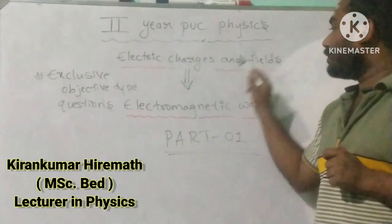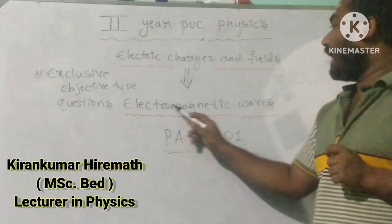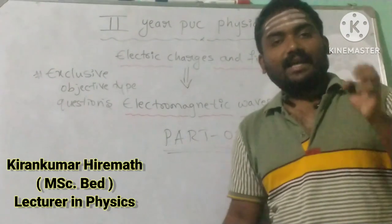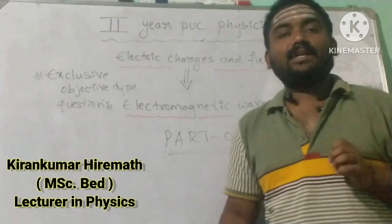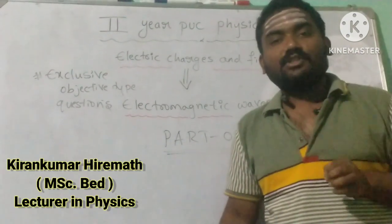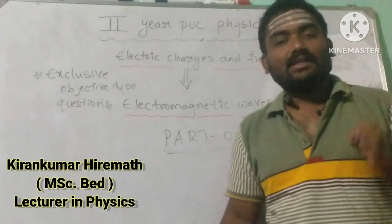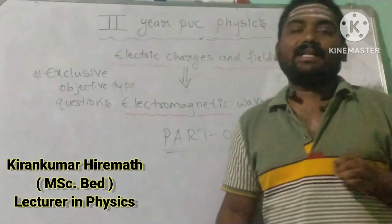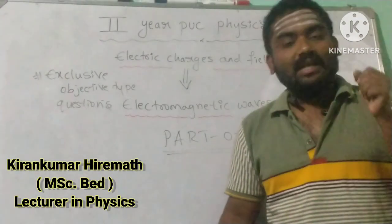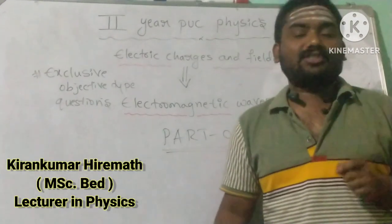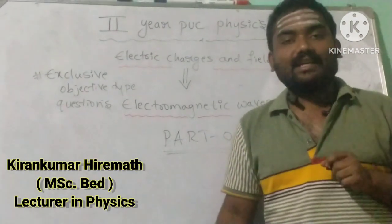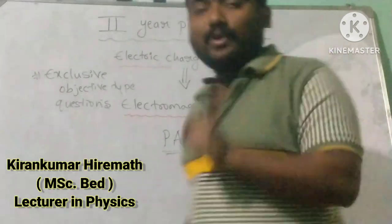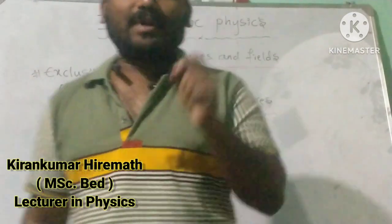These cover chapters from Electric Charges and Fields up to Electromagnetic Waves, including Electric Potential and Capacitance, Current Electricity, Moving Charges and Magnetism, Magnetism and Matter, Electromagnetic Induction, Alternating Current, and Electromagnetic Waves.